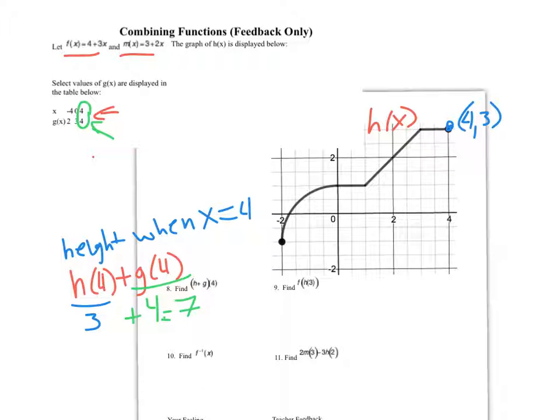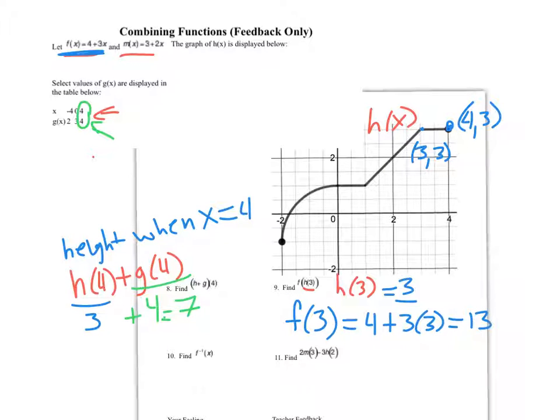For number 9, we're doing f of h of 3. I'm going to work from the inside out. This is composition. I'm going to find h of 3 first. In other words, I'm finding the height of this graph when x is 3. This is the point 3 comma 3, so I get 3 as an answer. I then take this 3 and plug it into f, f of 3. f is my equation up here. 4 plus 3 times 3, 4 plus 9 is 13, and I'm done.